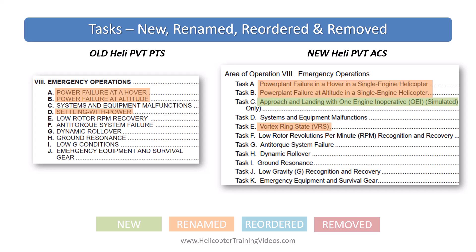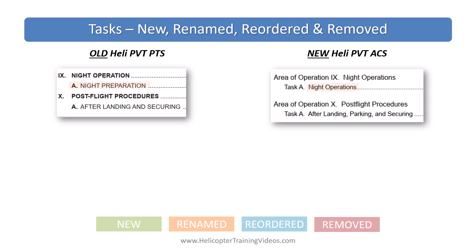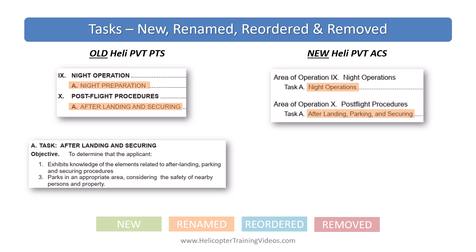The FAA finally renamed settling with power to vortex ring state, which was discussed in previous videos and will be deep-dived in future videos. There are also a couple of tweaks where acronyms have been spelled out — low RPM recognition recovery now explains what RPM stands for. Honestly, if you're taking your private check ride in a helicopter, you probably know what RPM and low-G mean, but it's been spelled out for clarity. Under night operations, they changed night preparation to night operations, and added the word parking to the after-landing securing task — parking was already part of the PTS knowledge elements, so it's mainly a clarification.